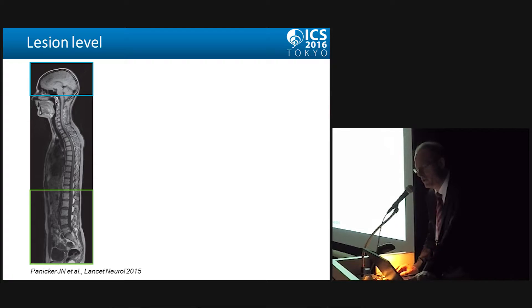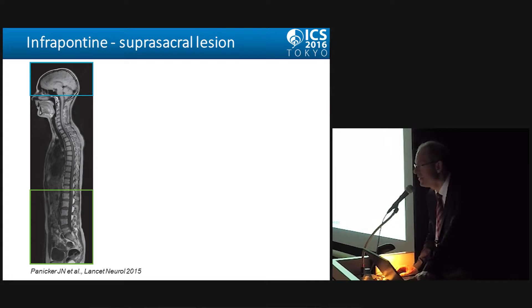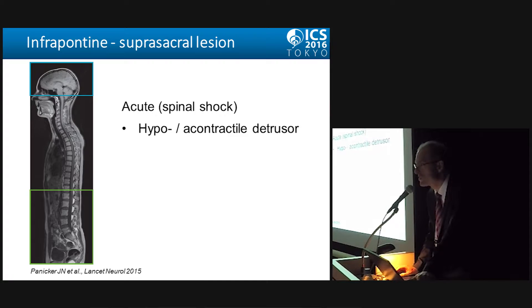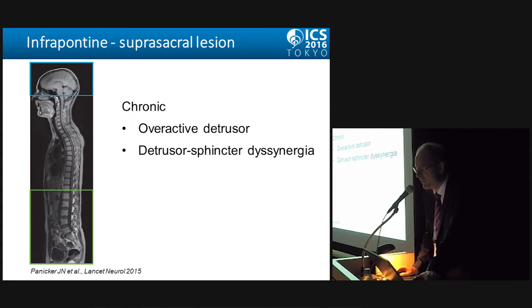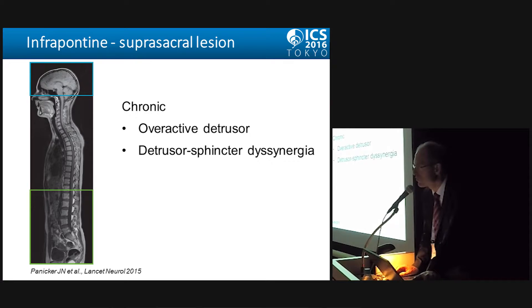The lesion level of spinal cord injury is typically between the infrapontine and suprasacral part — a suprasacral spinal cord injury lesion. In the acute phase, also called spinal shock, you will have a hypo or acontractile detrusor. The duration of the spinal shock phase is an honestly unsolved problem — there are no high-level evidence studies on that issue. It may be days or months. However, going from the acute to the chronic stage, the patient will present with an overactive detrusor and classically with detrusor sphincter dyssynergia.